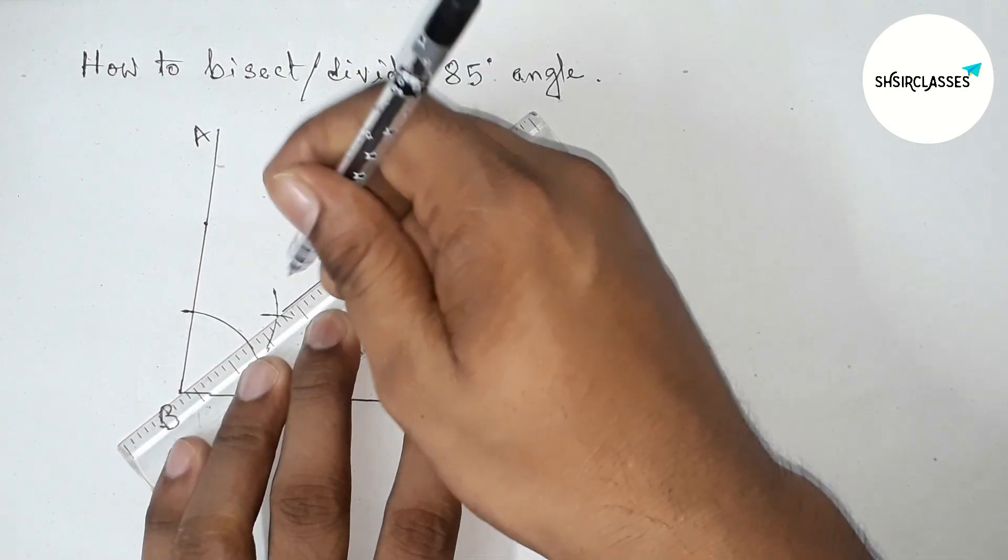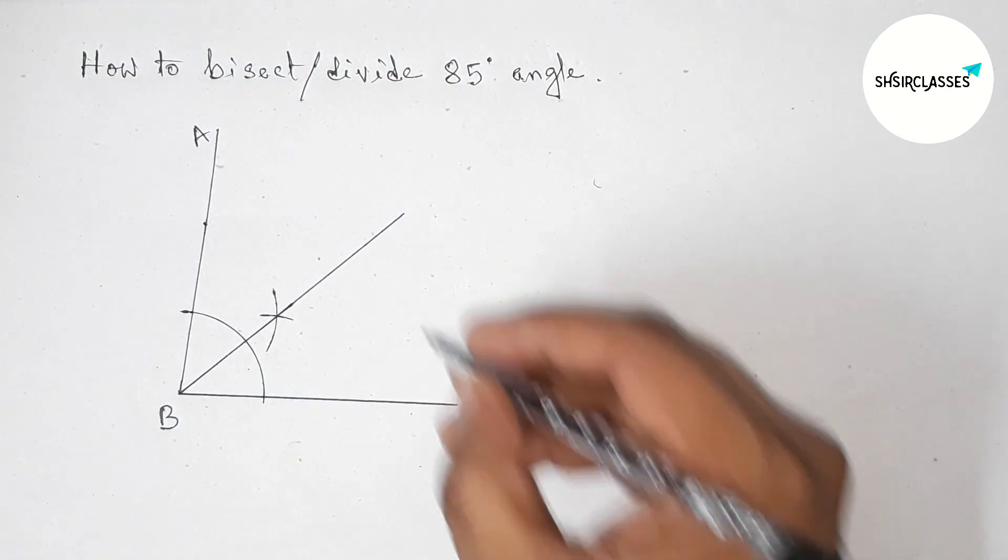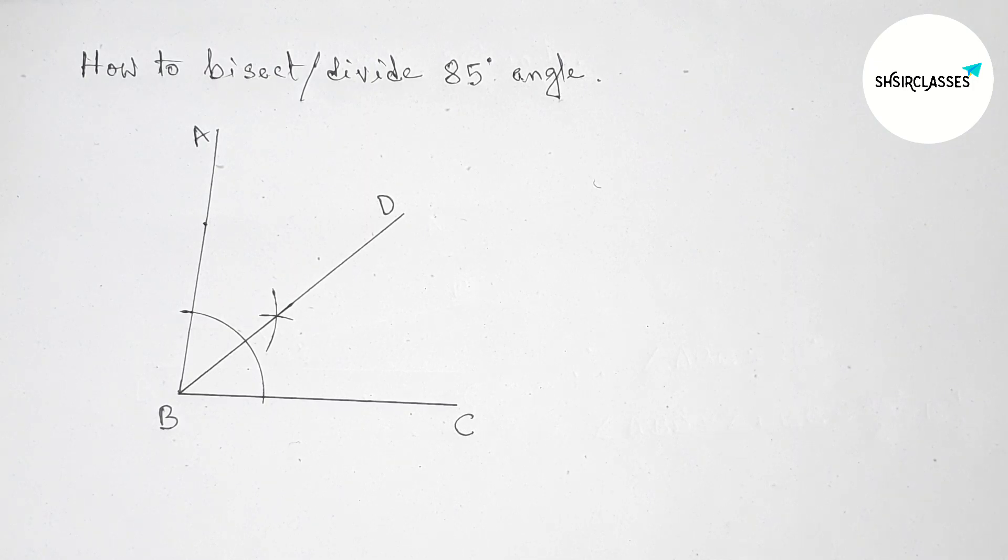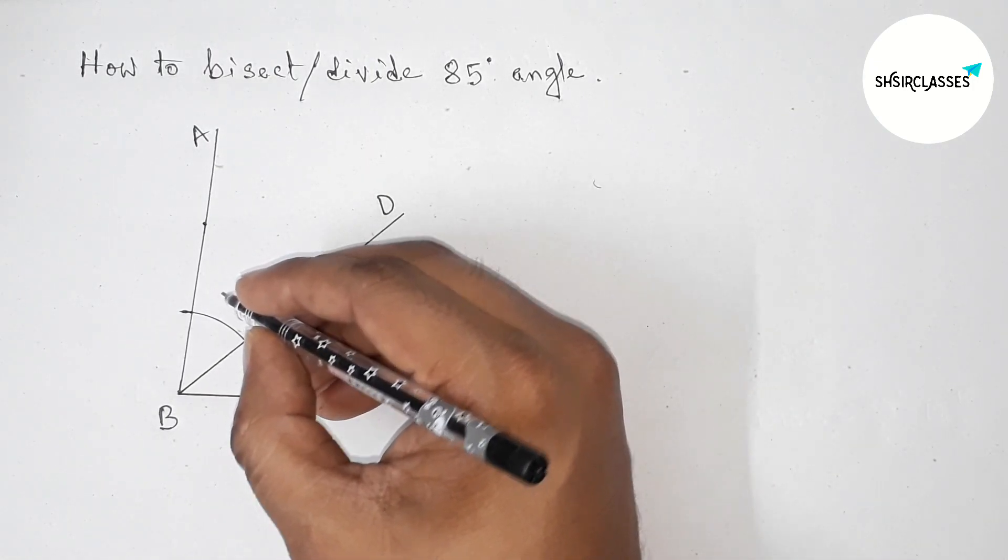Now joining this line. So this bisects the angle ABC. Now taking point here D. So here, first this one is.